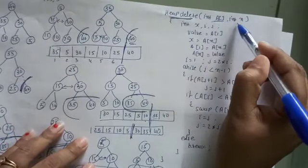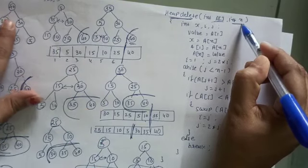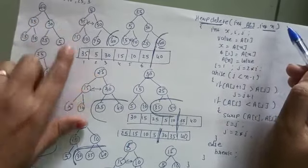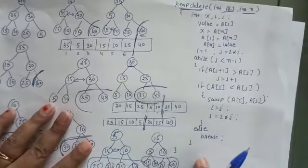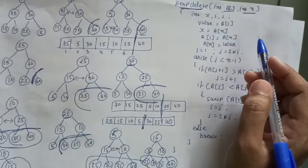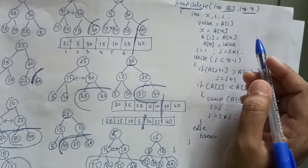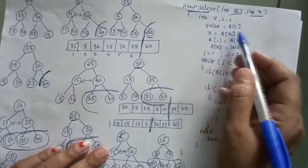So we will pass the whole array and total size of the heap. Initially it was 7, there were 7 elements. And every time you call this delete function, the size of heap should be decreased by 1. I will not write that function call of delete that you have to incorporate while you are implementing it.